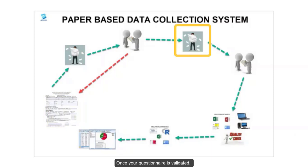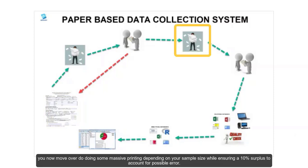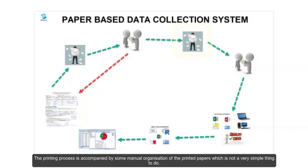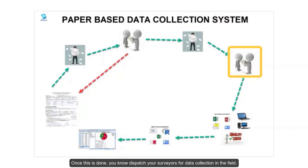Once your questionnaire is validated, you now move over to doing some massive printing depending on your sample size, while ensuring a 10% surplus to account for possible error. The printing process is accompanied by some manual organization of your printed papers, which is usually not a very simple thing to do. Once this is done, it is now time to dispatch your surveyors or data collectors for data collection in the field.